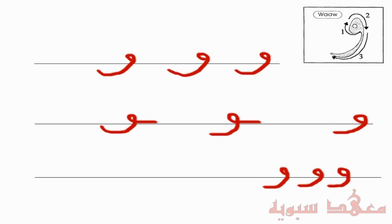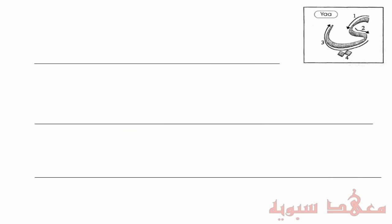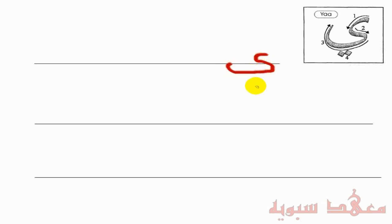The final letter is the Ya. This is more complicated. The isolated form, as you can see, is sort of like a duck shape. You start from about here, come around, and then go back up, and then put the two dots.